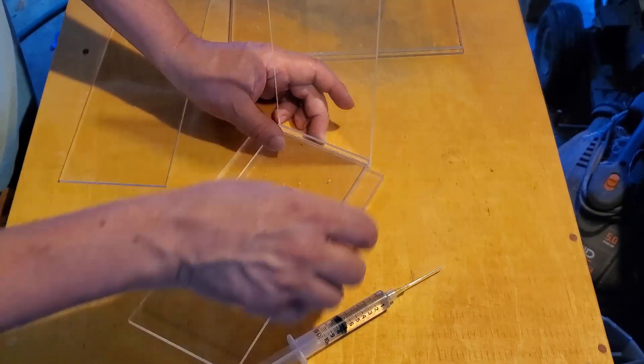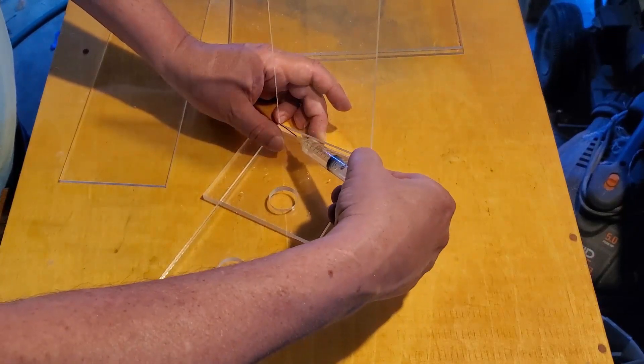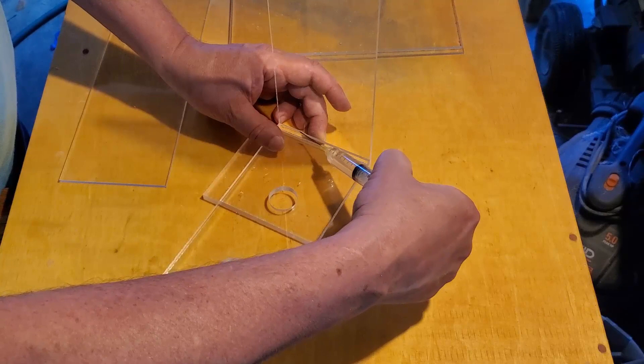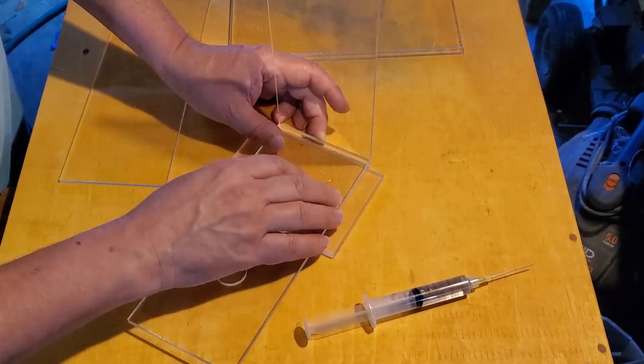In part one I had built the general box this is all going to fit in, and in part two here I am going to make all the workings that go inside that.